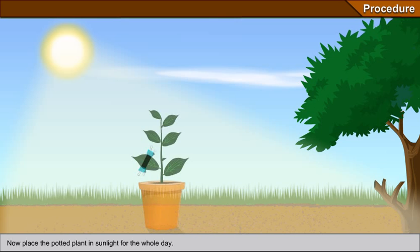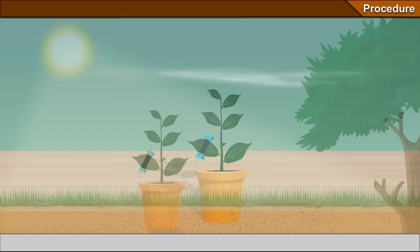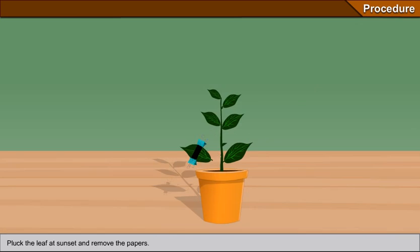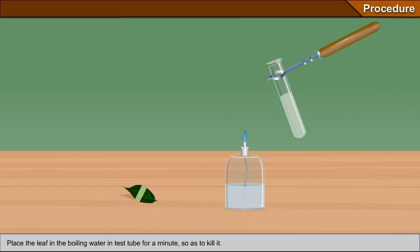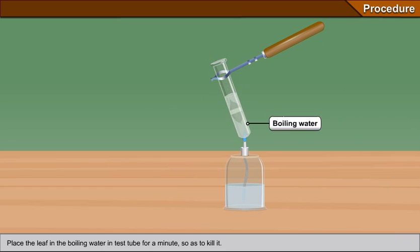Now place the potted plant in sunlight for the whole day. Pluck the leaf at sunset and remove the papers. Place the leaf in boiling water in the test tube for a minute so as to kill it.